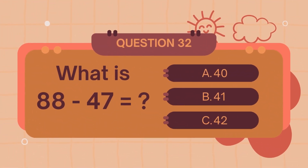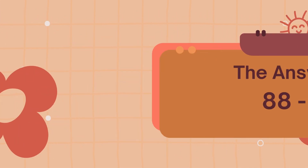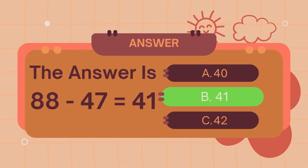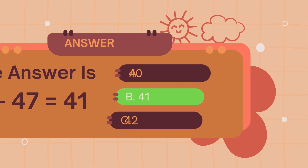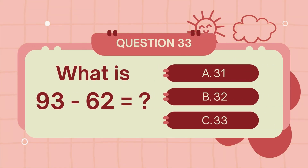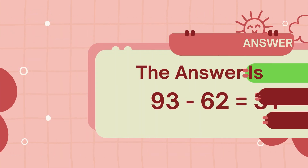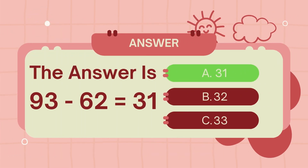What is 88 minus 47? The answer is 41. What is 93 minus 62? The answer is 32.